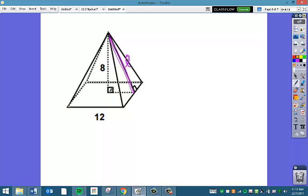So if this whole side is 12, this side of my right triangle is 6. It's half of the side. And so I can set up Pythagorean theorem. 8 squared plus 6 squared equals my slant height squared. This is 100. And so my slant height is the square root of 100, which is 10.